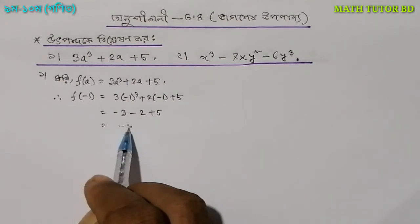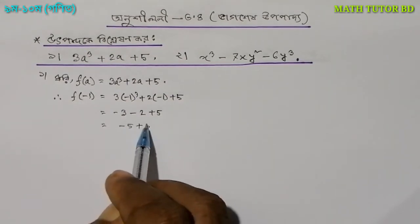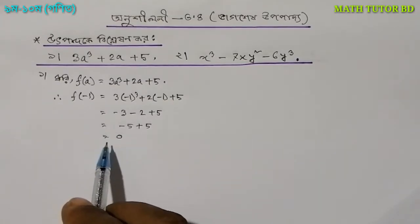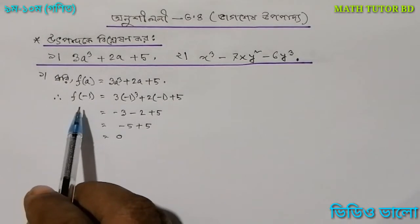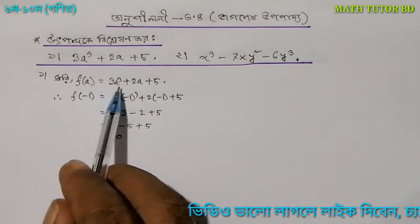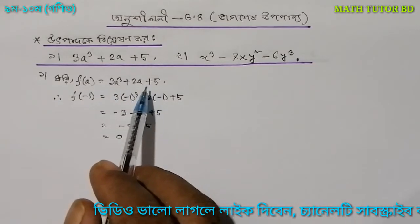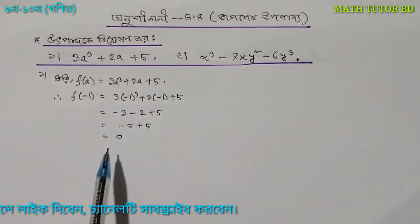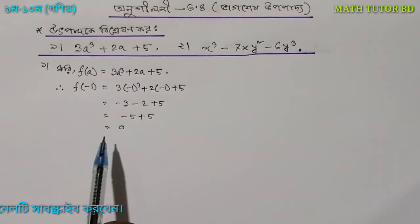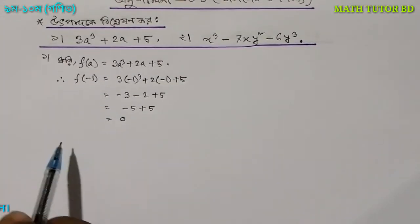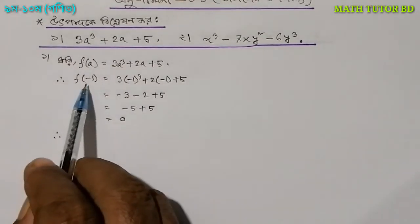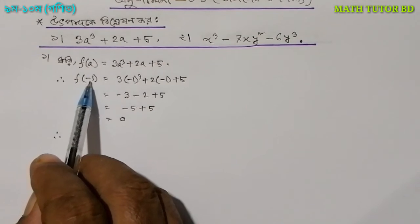So, minus 5, plus 5. So what is that equal to? It's 0. We can see that the function of a at minus 1 would become 0. So, f(1) — that is, f(minus 1) — is 0.